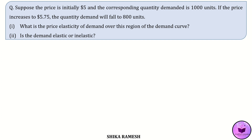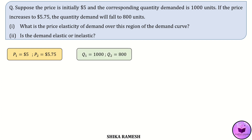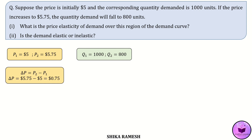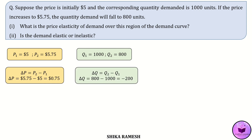Is the demand elastic or inelastic? From the equation, we can see that the initial price P1 is $5 and the new price P2 is $5.75, and the initial quantity Q1 is 1000 units while the new quantity Q2 is 800 units. The change in price is calculated as P2 minus P1, which gives us $0.75, and the change in quantity Q2 minus Q1 gives us minus 200 units.